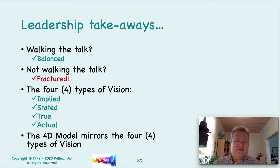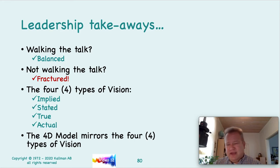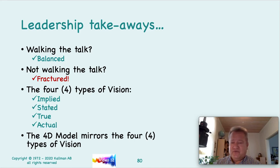The four types of vision — and Ted and I had done a white paper on this together many years ago — are implied, stated, true, and actual. And I'm going to show you how that actually mirrors the 4D model, those four types of vision.